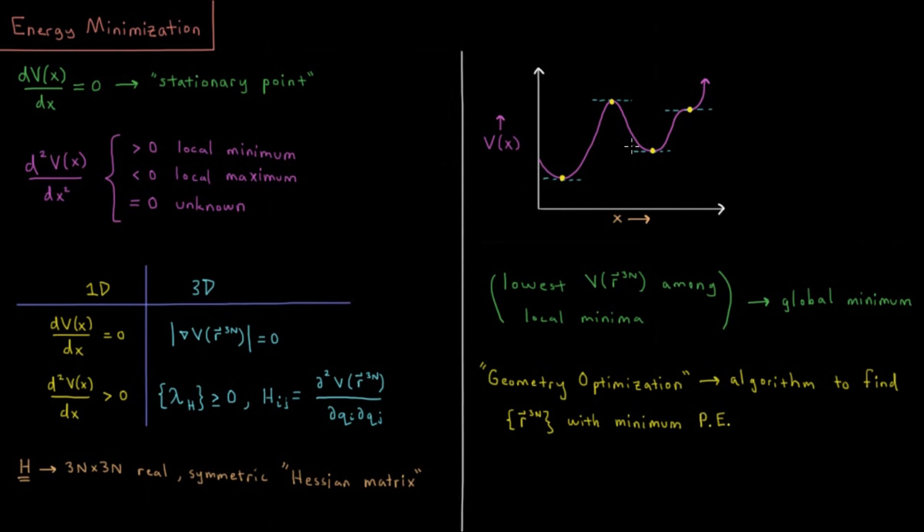And if the second derivative equals zero like in this case or in other kinds of situations it's unknown you could have a minimum, a maximum, or what you call a saddle point or a transition point. Lots of names for a situation where the slope is zero but it is neither a maximum nor a minimum.